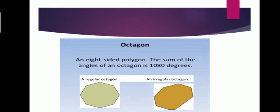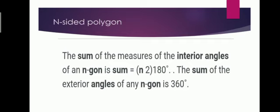Now, octagon. An octagon is an eight-sided polygon. The sum of the interior angles of an octagon is equal to 1080 degrees. To recap: triangle is 180 degrees, quadrilateral is 360 degrees, pentagon interior angles, heptagon is 900 degrees, octagon is 1080 degrees.